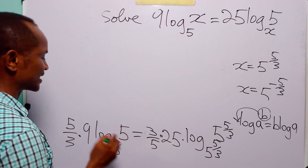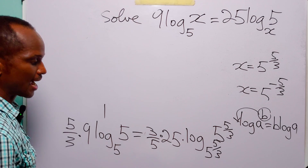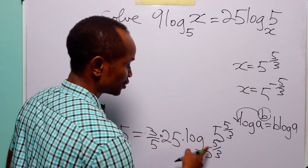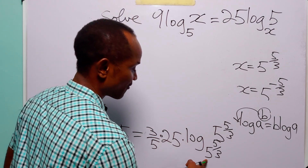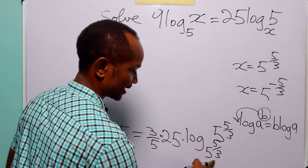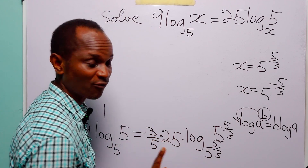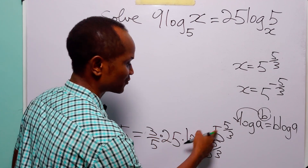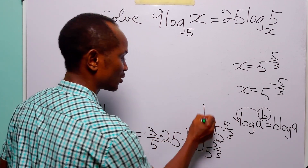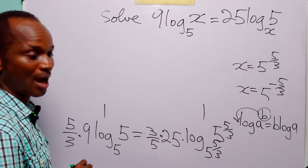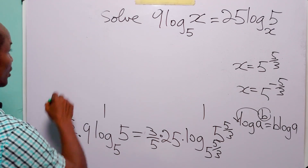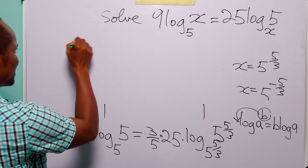...and we also know that log base (5^(5/3)) of (5^(5/3)) is also equal to 1. So on the left-hand side we have...